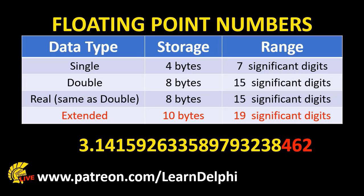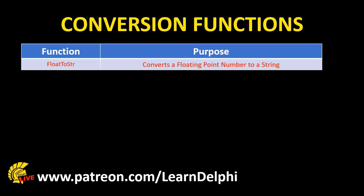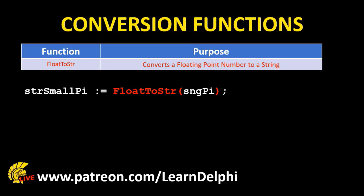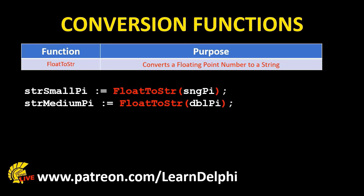Just like integer numbers, we must also convert floating point numbers to strings if we need to display them as output. The FloatToString function converts a floating point to a string. For example, it converts a single called sngPi from a floating point number to a string before assigning the result to a string called strSmallPi. This also works the same way for a double and for an extended floating point number assigned to a string variable called strBigPi.